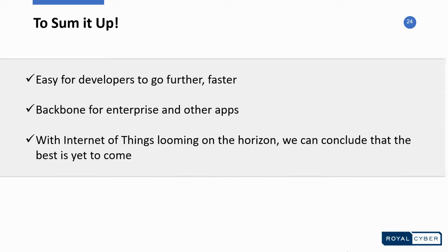To conclude, Mobile Backend as a Service is all about helping every app idea magnify by making it easy for developers to go further much faster. It can accomplish things that seemed hard to reach before, and undoubtedly it's the fastest-growing market for cloud services. Mobile Backend as a Service has become the backbone for enterprise and other apps, and with the Internet of Things looming, the best is yet to come. It has much to offer, and that's what makes it very important for application development.